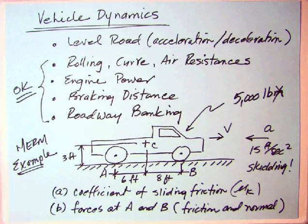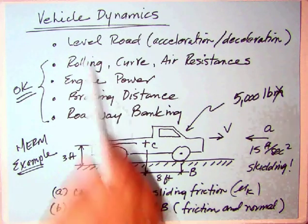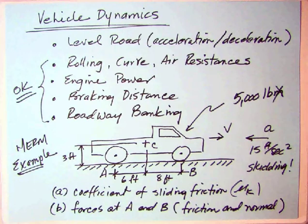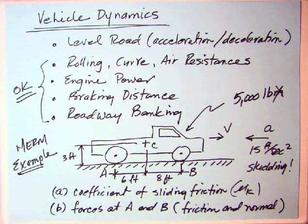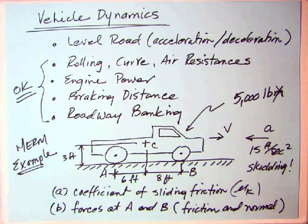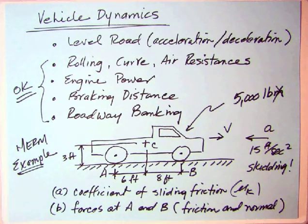In what I'm now calling vehicle dynamics part one, the discussion really was about level road motion — acceleration or deceleration. The example we were looking at is this truck that weighed 5,000 pounds. It was skidding along. You were given a deceleration of 15 feet per second squared. You were asked for the coefficient of sliding friction and the forces at A and B — the friction and normal.